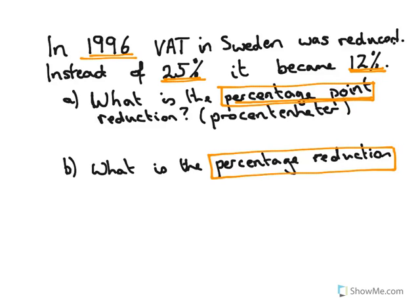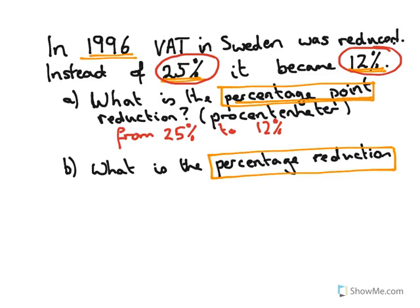When we're looking at percentage points, we're just looking at what did we go from and what did we go to. We went from 25% to 12%. We absolutely do nothing except subtract: 25 minus 12. So the reduction is 13 percentage points. It's just how many parts out of 100 did we do a reduction of — we reduced it by 13 parts out of 100, so 13 percentage points.